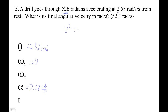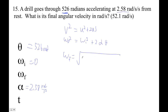So v squared equals v squared plus 2as, which angularly looks like ω² = ω₀² + 2αθ. We're trying to find the final angular velocity, so we plug in: zero squared plus 2 times 2.58 times 526.